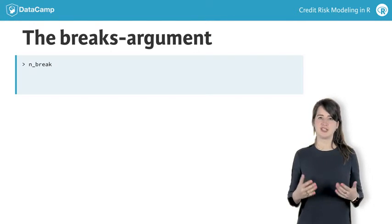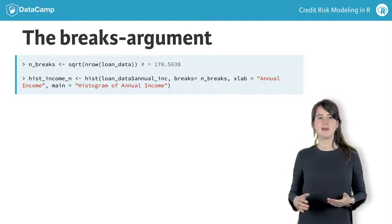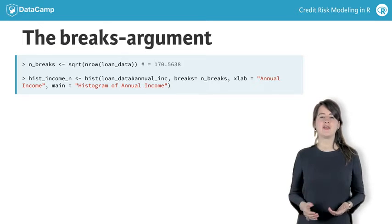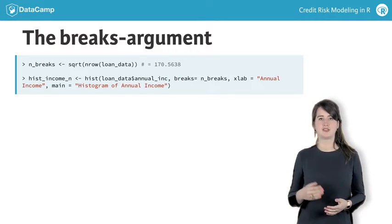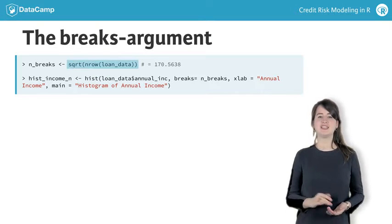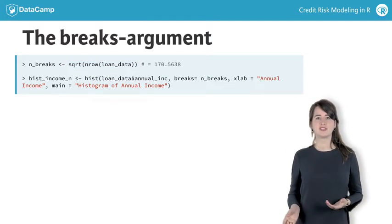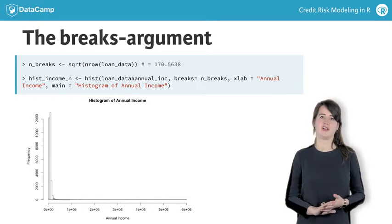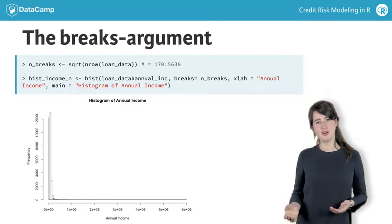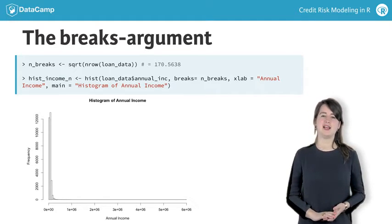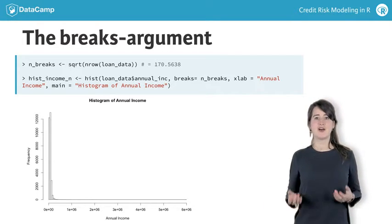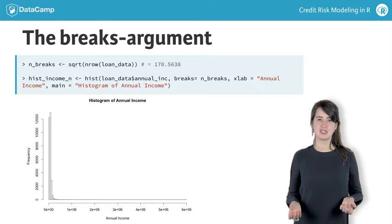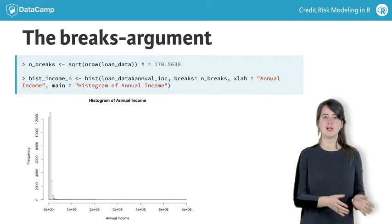This can be done by choosing a number that seems more appropriate, or use a rule of thumb, such as the square root of the number of observations in the data set. This results in a much longer vector of breaks. However, the result still doesn't look very nice here, with a lot of blank space. The x-axis of the histogram automatically ranges from the smallest observed value to the largest one.